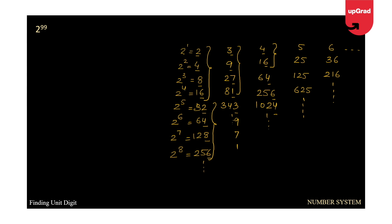For 2 and 3 the repetition happens after 4 numbers, whereas for 4 it happens after 2, for 5 it is 1, and for 6 it is 1. This cyclic pattern after which the unit digit repeats is termed the cyclicity of that number. To summarize: cyclicity of 2 is 4, cyclicity of 3 is 4, cyclicity of 4 is 2, cyclicity of 5 is 1, cyclicity of 6 is 1. We can calculate the cyclicity for each number.